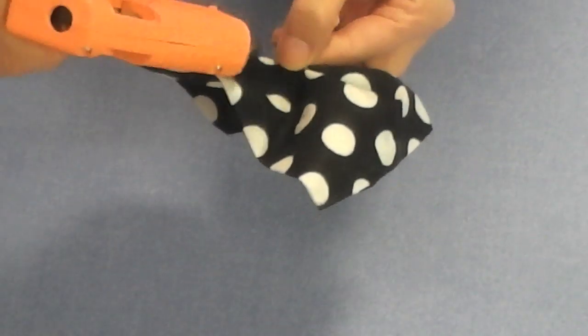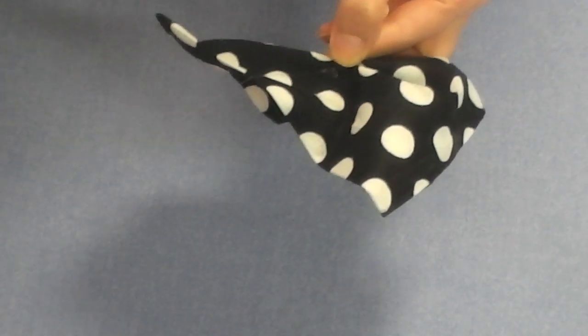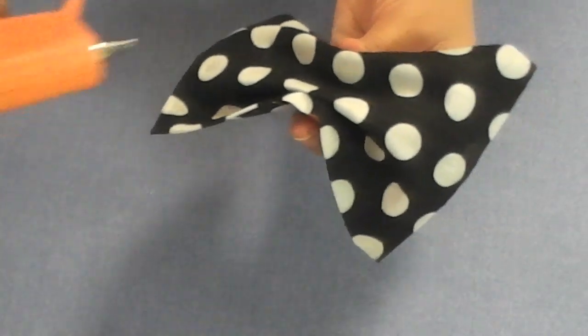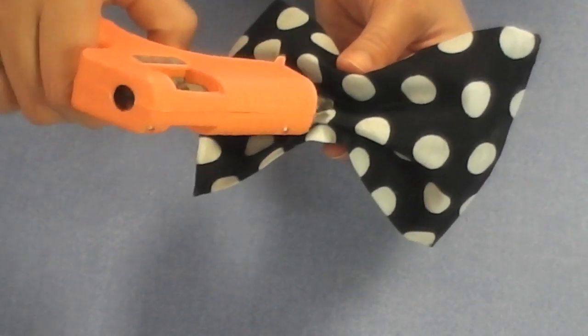After it's shaped the way you want it, you just want to dab a little bit of glue on the side and then press it really firm and then you want to do the same thing on the other side of your bow.